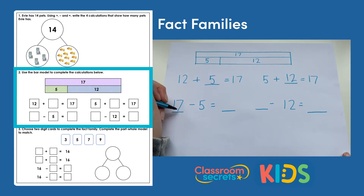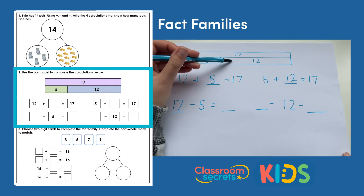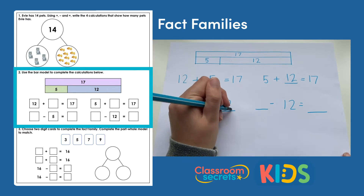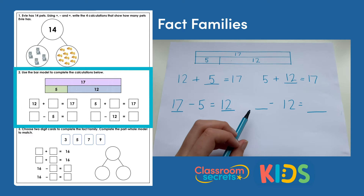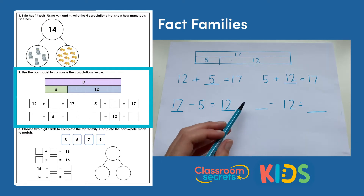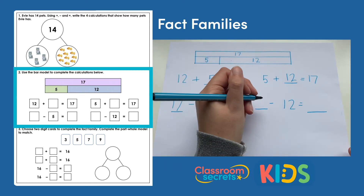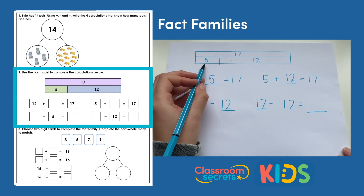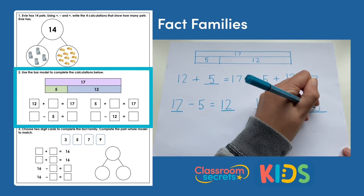Now for our subtracts, we know the whole number always comes at the beginning, so it's going to be 17. 17 take away 5 equals 12 — our remaining part. And now for our last one, remember subtract always starts with the whole number: 17 take away the part 12 leaves us with 5 — our remaining part.